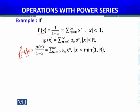And it will be convergent for all x such that |x| is less than the minimum of the radius of convergence of f(x) and the radius of convergence of the other series g(x).